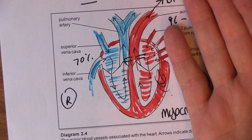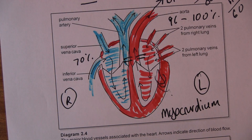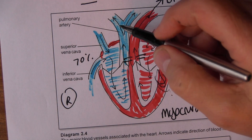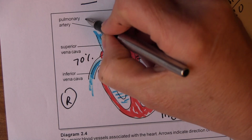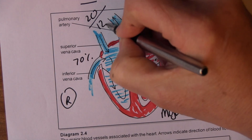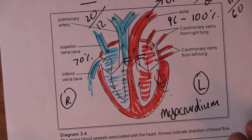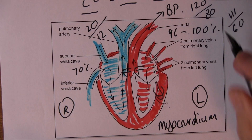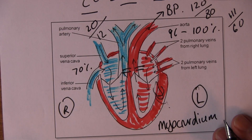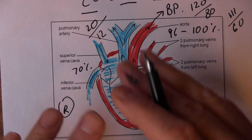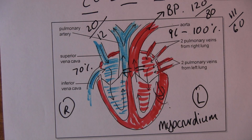The lungs are quite close — just on either side of the heart in the chest — so it's not far for the blood to go. Normal pressure in the pulmonary artery might only be about 20 when the heart's contracting, dropping to about 12 when relaxing. That's 20 over 12, much lower than the systemic 120 over 80, because it's a much shorter distance.